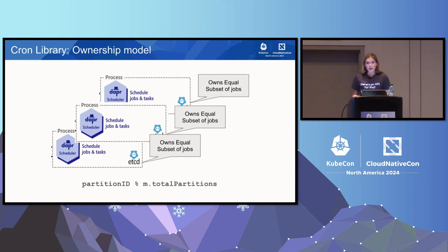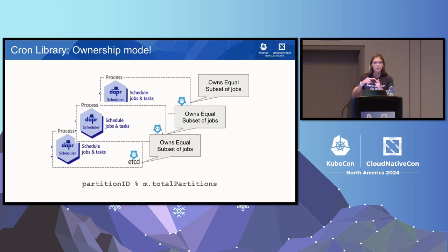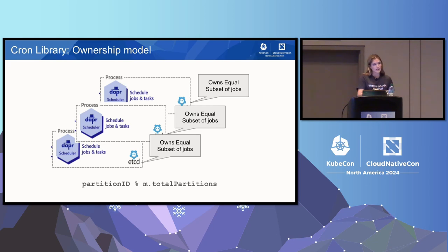Let's talk about the job ownership model — dynamic leadership partitioning. With a single scheduler, it's responsible for triggering every single job from zero to N. When you have three schedulers running in HA mode, we do partition_ID mod total_partitions — the scheduler ID mod the total. So roughly we get an equivalent split of the jobs to the schedulers, such that each scheduler owns a subset of jobs to trigger back, sharing the load.